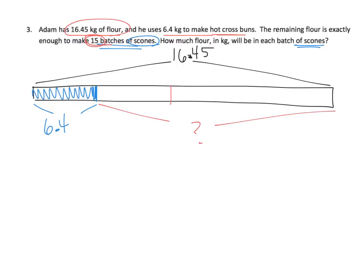And then it says the remaining flour. Now we don't know how much is the remaining flour. But it's going to be used to make 15 batches of scones. So let's see, 15 batches. I'm going to cut it into thirds. Then I'm going to cut each one of those into five pieces. So there's our 15 batches of scones. And the question is, how much is one of those batches?